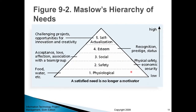This pyramid shows that at the very bottom are physiological needs — the first thing humans need to satisfy is food, water, and shelter. We cannot live without having those basic needs satisfied. Once you satisfy those, you move to the higher-order need of physical safety and economic security. Now that you have food, shelter, and water, you start thinking about the future: will I be able to provide these things for myself long-term? So you start worrying about safety needs.